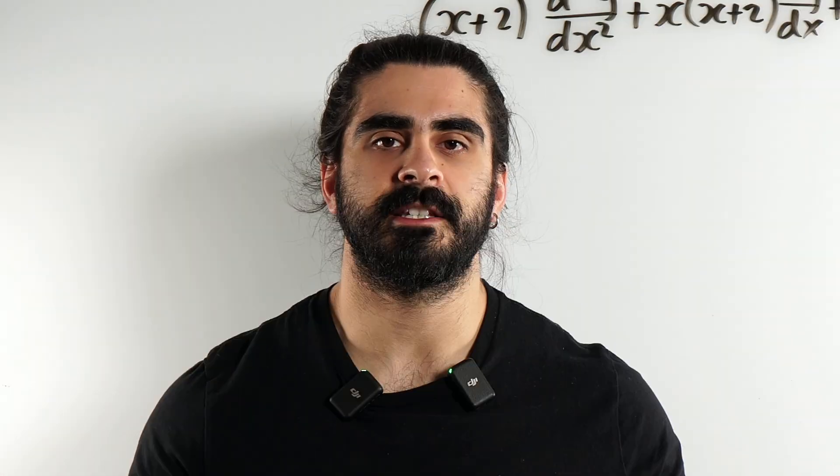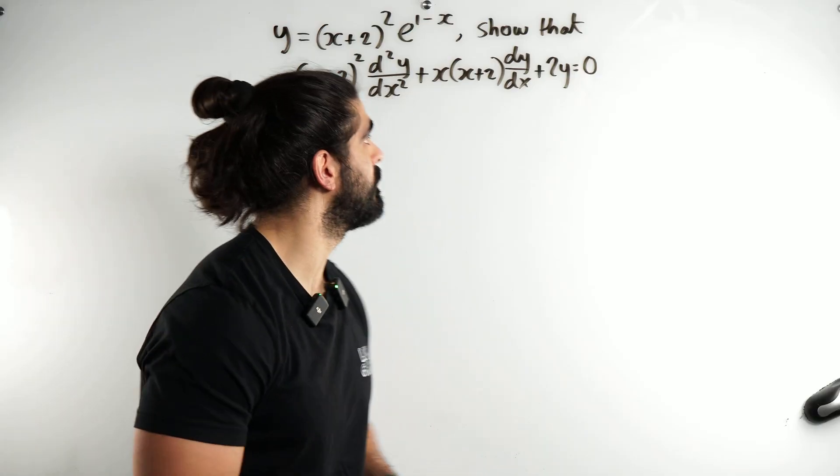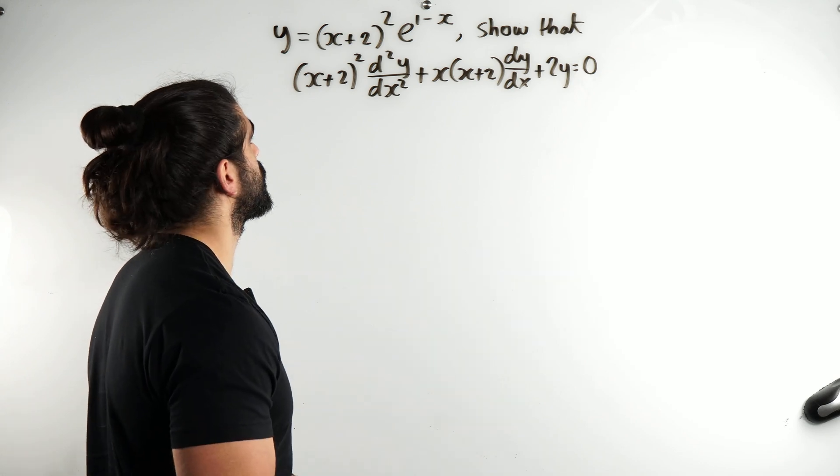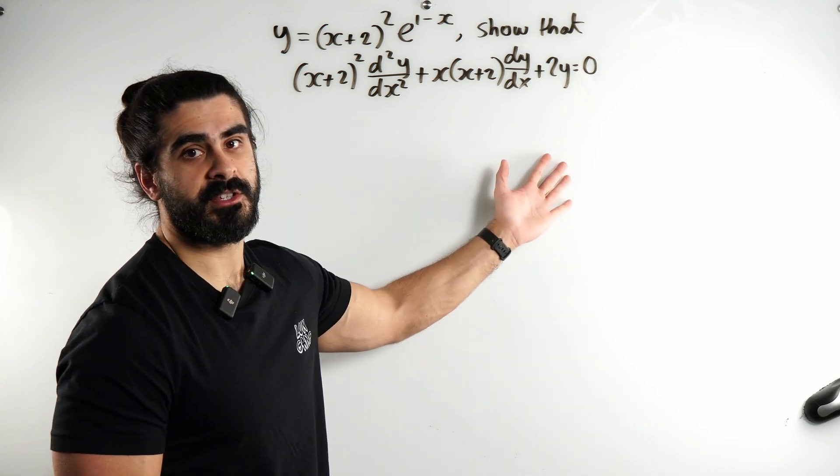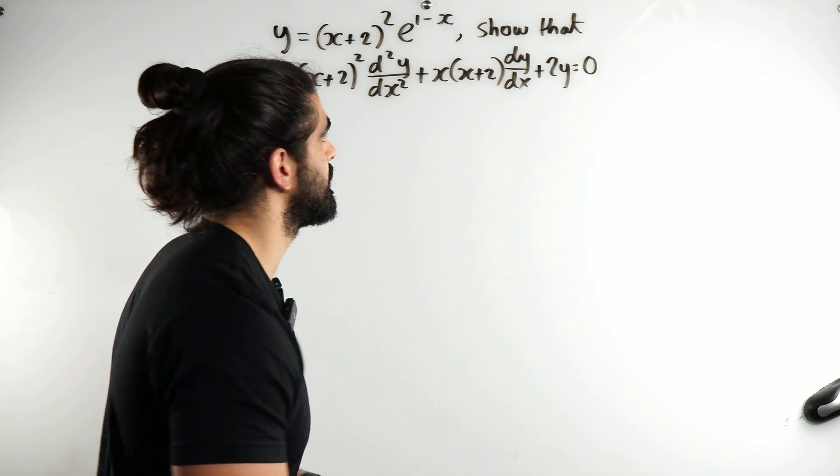Learn gang, easy differentiation. So we have y equals x plus 2 squared e to the power of 1 minus x. Show that all of this beautiful writing has to be equal to 0.